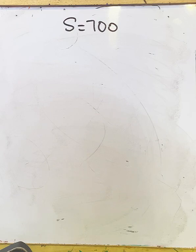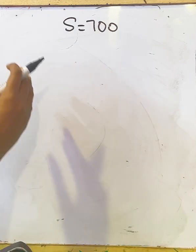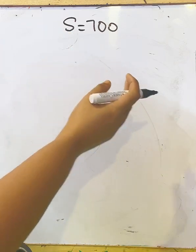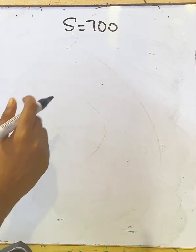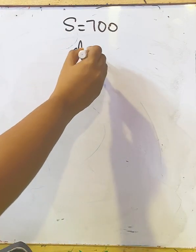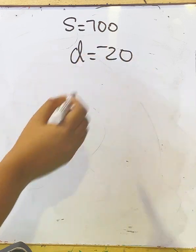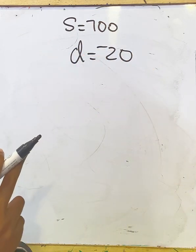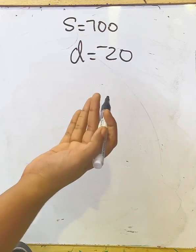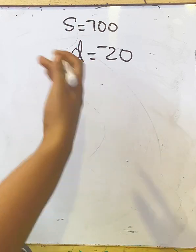Each prize is 20 less than its preceding prize. In a series, each term is 20 less than the preceding prize. That means the common difference is negative 20, not positive 20. 20 is not more than the preceding price; 20 is less than the preceding price.